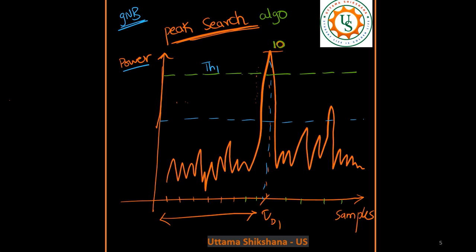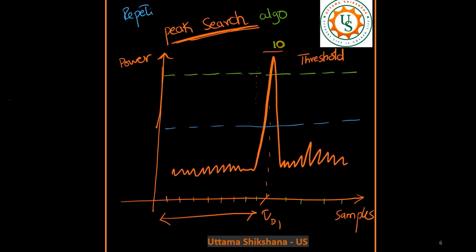Based on that, I have considered one example plot here. After performing the correlation at the gNB in the PRACH algorithm, there is a definite peak. Based on this peak one can set threshold value one — that looks fine. But if you want to lower the threshold, we can see that a false peak is detected, so this is not a good thing to lower.